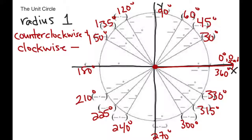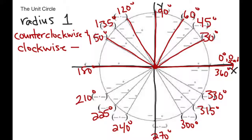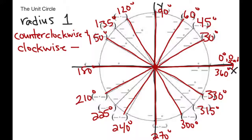What I want you to notice is that you're going to be able to see that these angles are all multiples of 30: 30, 60, 90, 120, 150, 180, 210, 240, 270, 300, 330, 360.